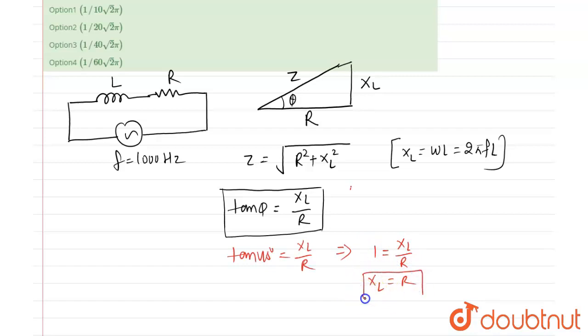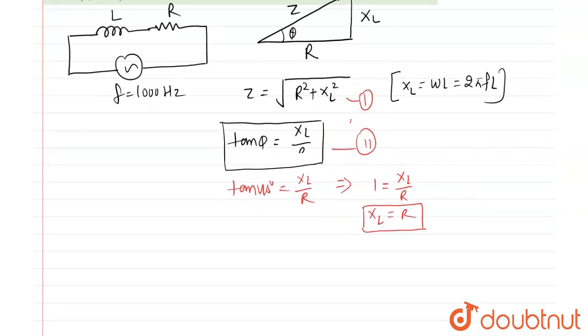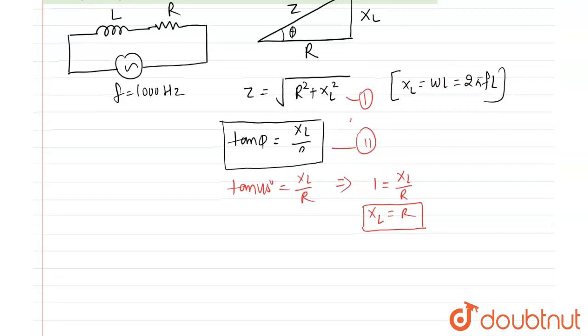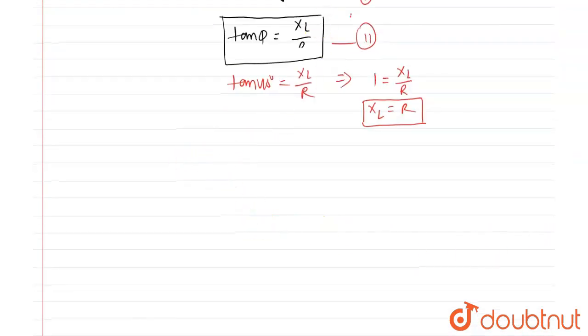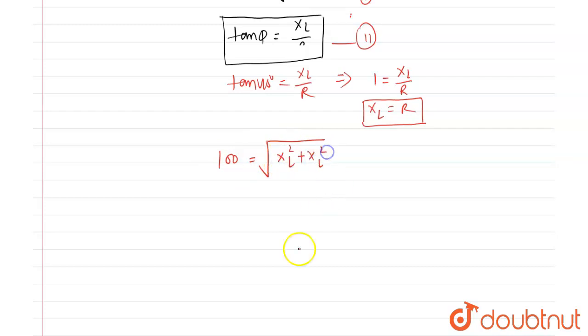So we will put that value in the first equation. Now put that value in equation number first. Value of Z is given as 100, so Z is equal to 100. So 100 is equal to root of XL square plus XL square, which is root of 2 XL square.